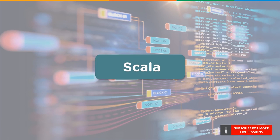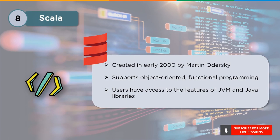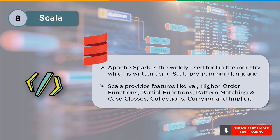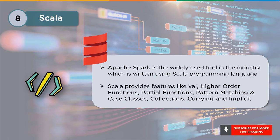Next up is Scala. Scala was created by Martin Oderski and is an object-oriented and functional programming language. It allows users to access Java and Java Virtual Machine libraries. Other key features include fewer lines of code, faster deployment, testing and development, and improved stability and productivity. When it comes to data science, Apache Spark — widely used in the industry — is written using Scala. Spark is an extension for Hadoop, doing both batch and real-time processing. Scala also offers features like Val, higher-order functions, partial functions, pattern matching, case classes, and collections.